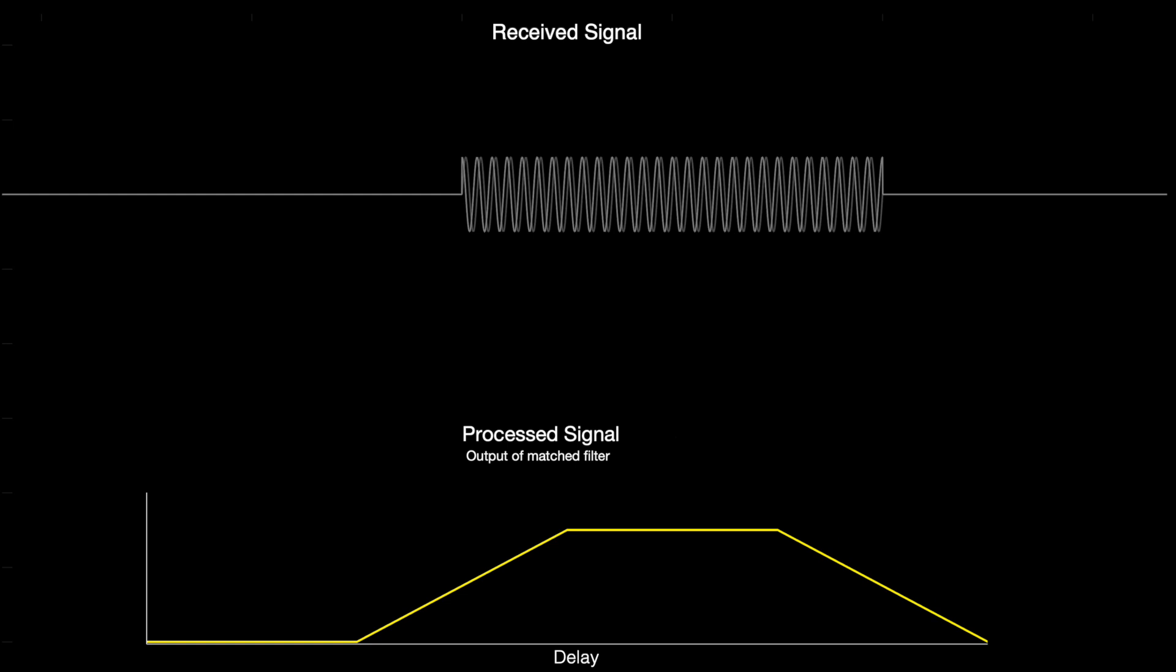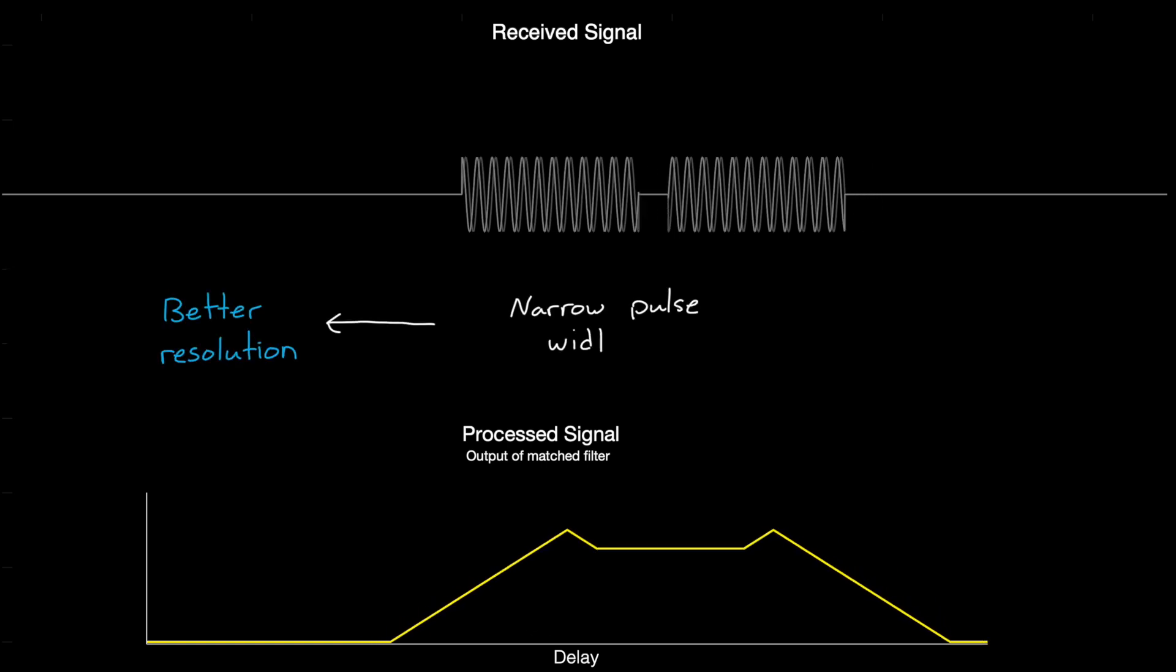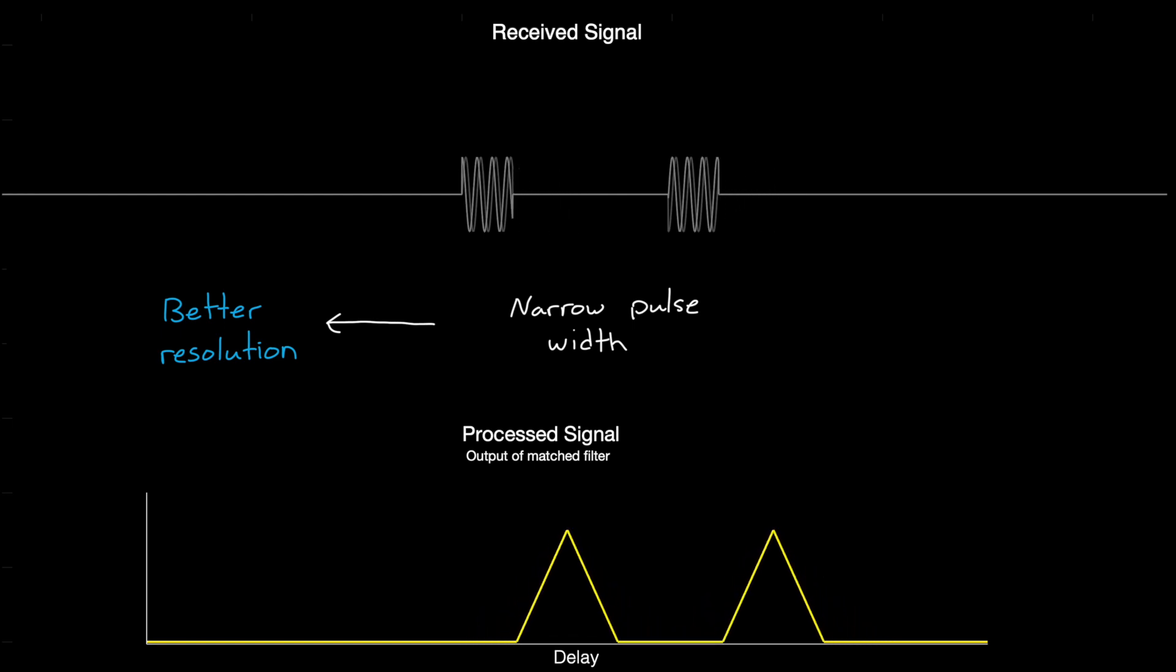This is a radar bandwidth issue. And in the case of a rectangular pulse, the bandwidth is a function of the pulse width. Therefore, we can increase bandwidth, and therefore resolution, by just lowering the pulse width. And this is because the objects can now be closer to each other before the returned pulses overlap.